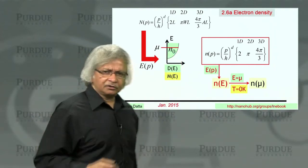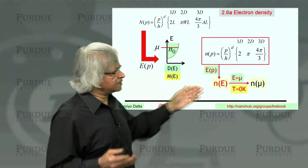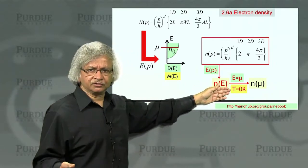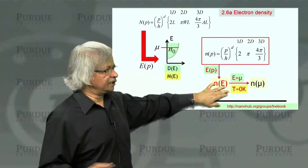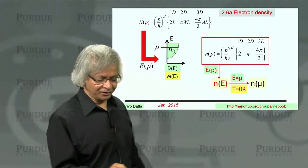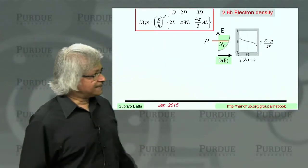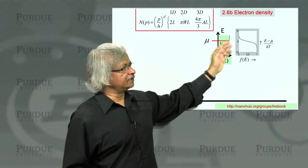Now, what we want to talk about is how do we do this when T is not equal to 0 Kelvin, when it's at a reasonable temperature, I mean not at 0. Because then, as you know, the states are not occupied.